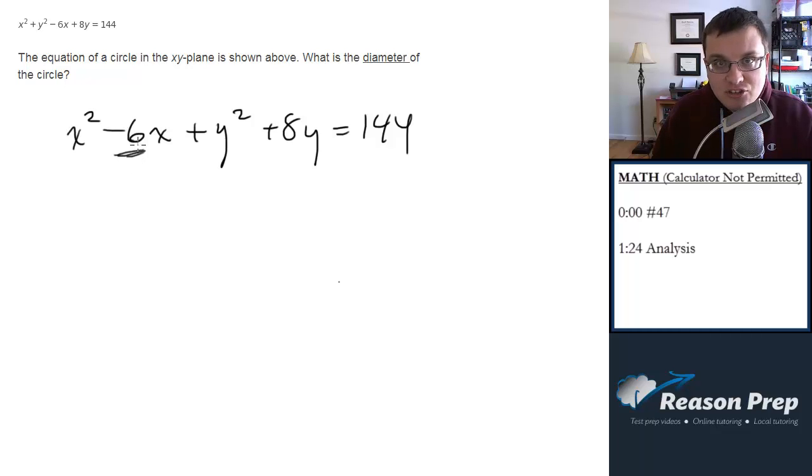So 6 divided by 2 is 3, 3 squared is 9. So we're going to do x squared minus 6x plus 9 and then we're going to add 9 to that side.